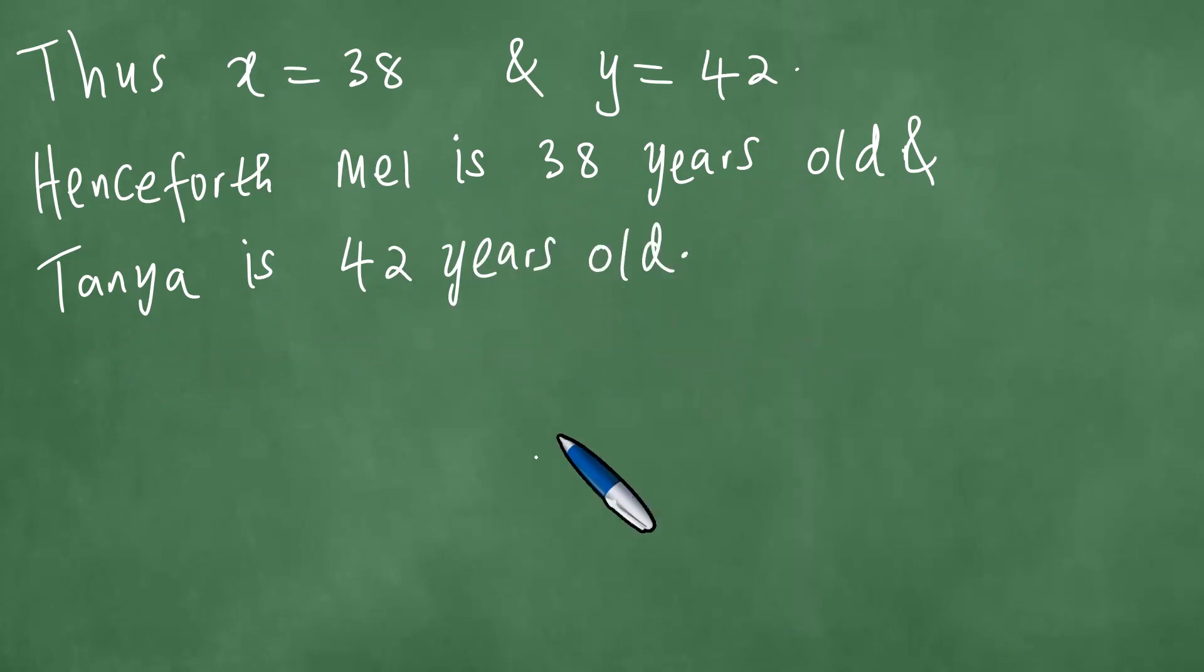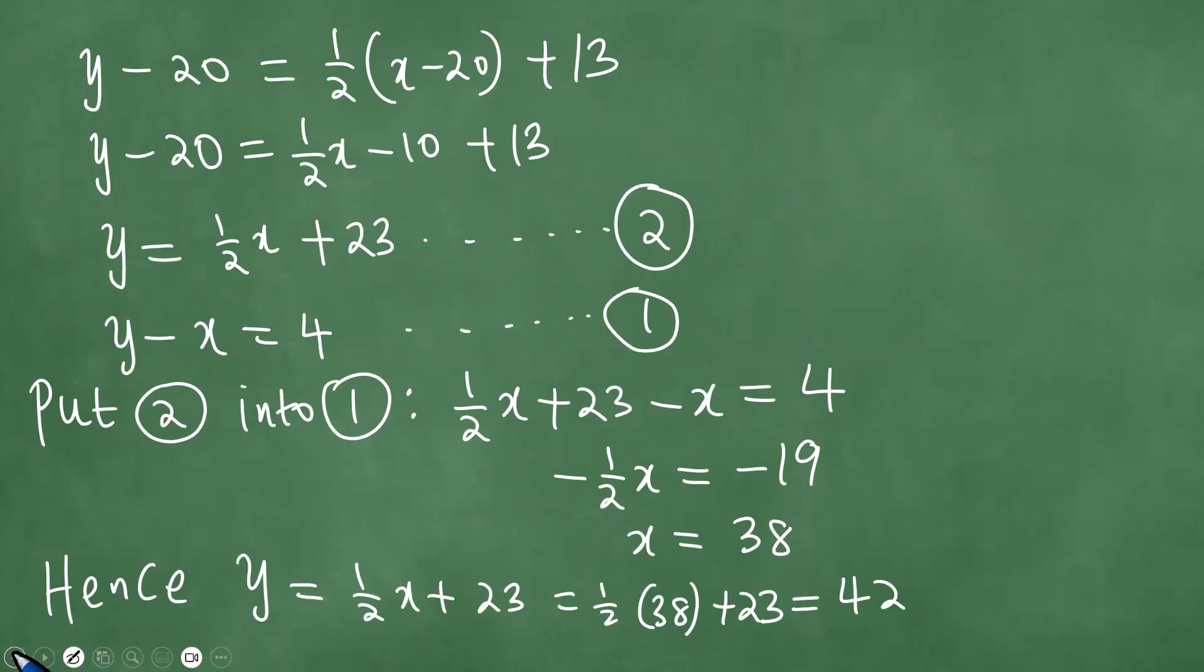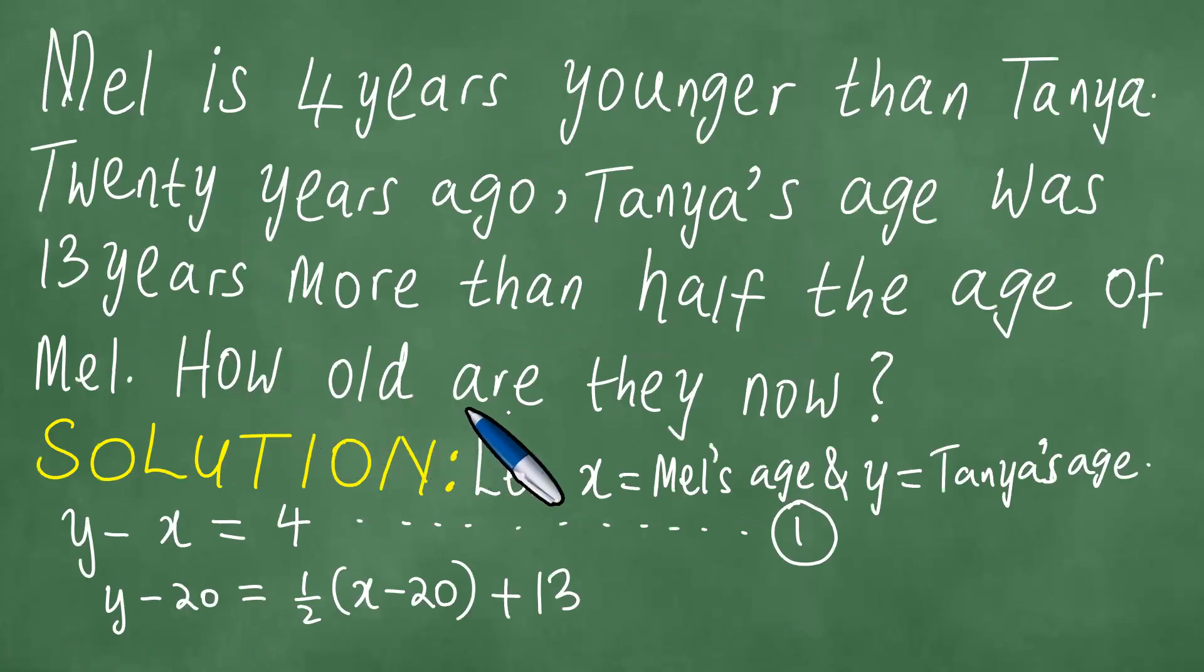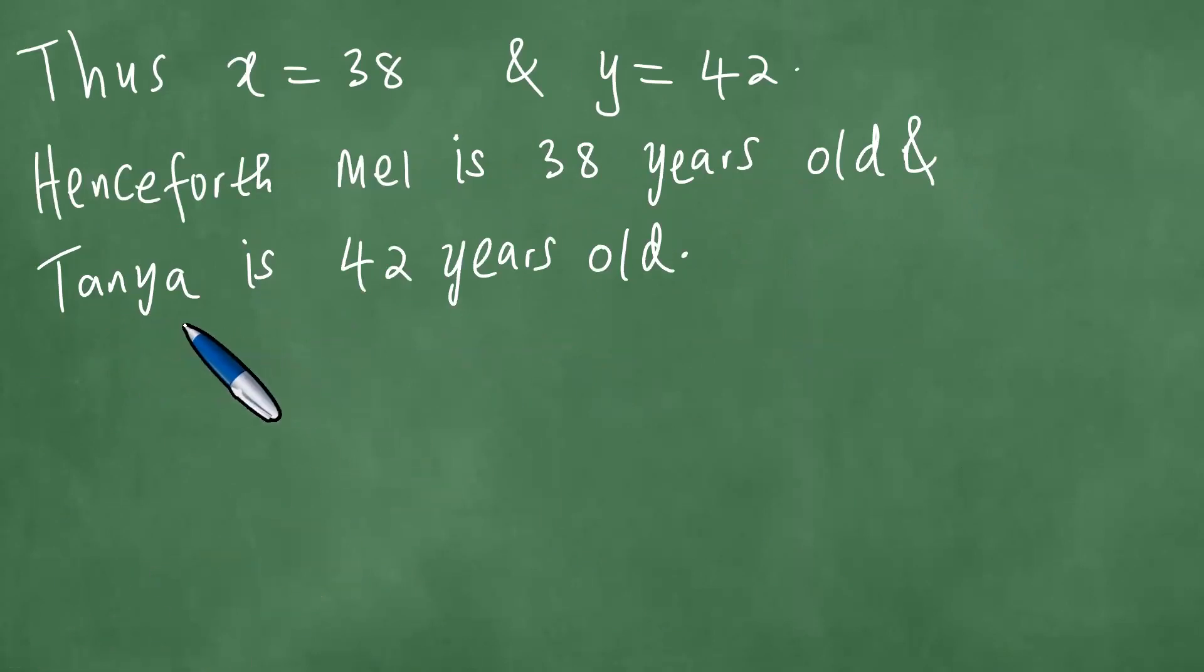And Tanya is 42 years old. The question was how old are they now, and we can see that Mel is 38 years old and Tanya is 42 years old. Therefore, we are done solving this problem.